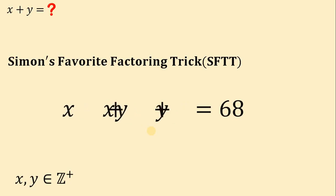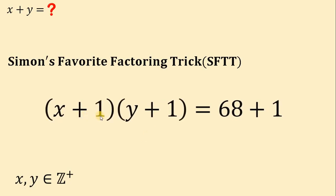If we add 1 on both sides and rearrange some terms on the left-hand side, we have xy plus x plus y plus 1, which is factorable. If we factor this, we get x plus 1 multiplied by y plus 1.